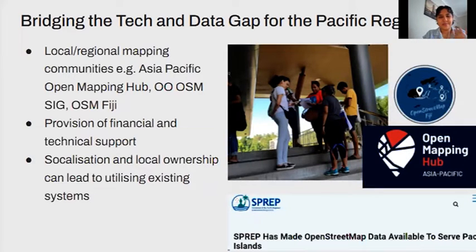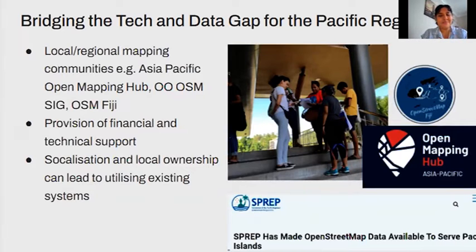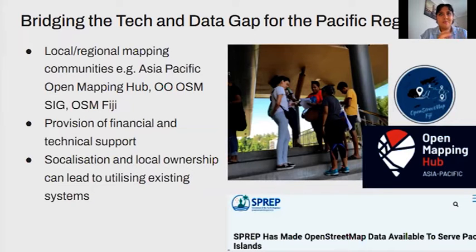These include local and regional mapping communities that exist and have grown in the region. A good example is the Asia-Pacific Open Mapping Hub under the Humanitarian OpenStreetMap Team. We also have OSG Hoshan, your OpenStreetMap special interest group, and OSM Fiji. We've seen a proliferation of bodies and communities that can assist us, as all Pacific countries are listed as HOT priority countries. This has led to an increase in financial and technical support for mapping bodies in our region. Just recently, we've seen Kiribati — women in MapBeam, based in Kiribati — start activities for field data collection and validation under HOT OSM.